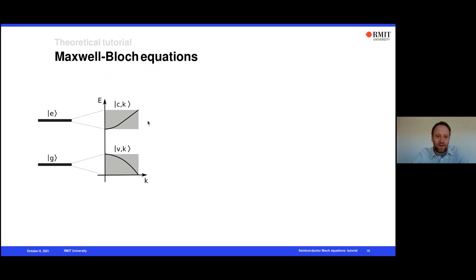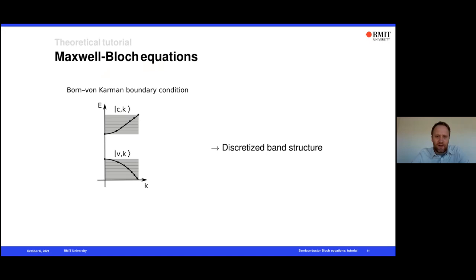All optical phenomena related to a two-level system can be described by Maxwell-Bloch equations. But in semiconductors, the picture is more complicated because instead of just two levels, we have energy bands filled by electrons. So it is a many-body problem, because electrons occupying bands interact with each other via Coulomb interaction. The question is: how can we transfer our knowledge about Maxwell-Bloch equations to semiconductor physics?